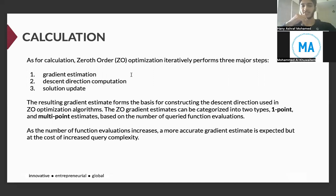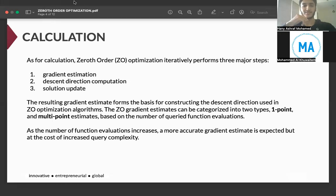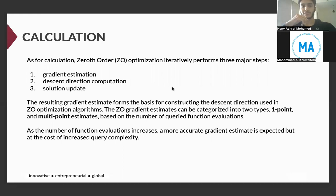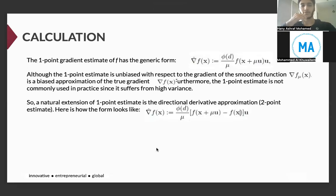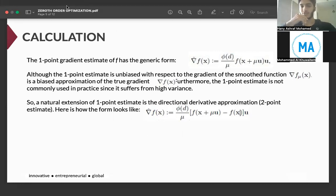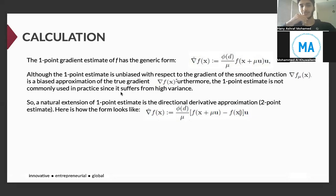As the number of function evaluations increases, a more accurate gradient estimate is expected, but at the cost of increased query complexity. The one-point gradient estimate of function f has the generic form shown on the right side. Although the one-point estimate is unbiased with respect to the gradient of the smooth function, it's a biased approximation of the true gradient. Furthermore, the one-point estimate is not commonly used in practice since it suffers from high variance. A natural extension of one-point estimate is a directional derivative approximation or two-point estimate.